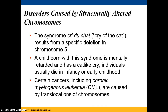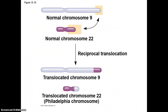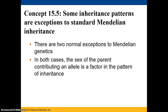There's also a condition — translating to 'cry of the cat' in French — involving a specific deletion of chromosome number five. A child born with this syndrome is mentally delayed and has a cat-like cry; these individuals usually die in infancy or early childhood. Other conditions like CML, or chronic myelogenous leukemia, are caused by translocations of chromosomes, which we also studied in the cancer and cell cycle lab.